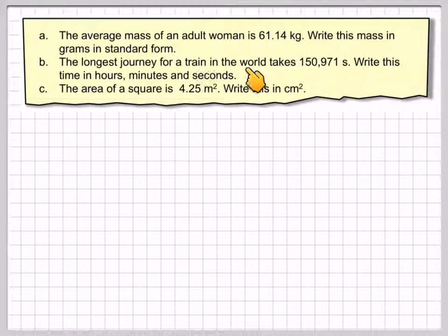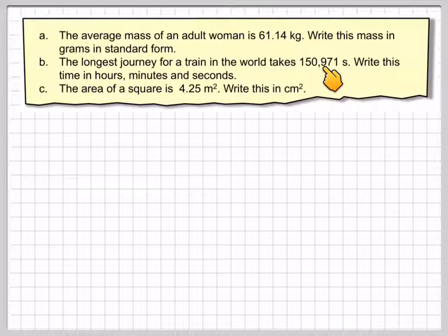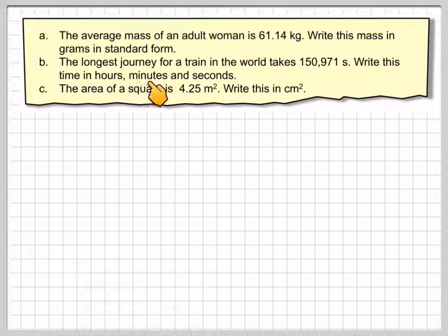The longest journey for a train in the world takes 150,971 seconds. Write this time in hours, minutes, and seconds.